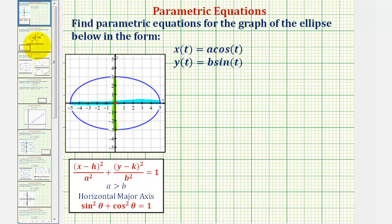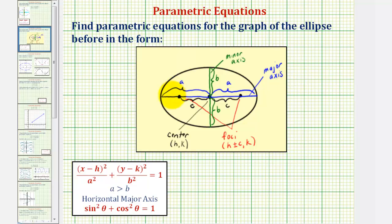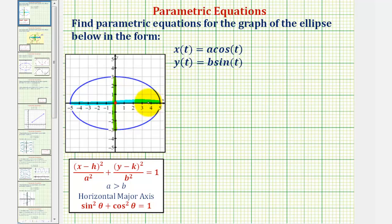And now for a quick review: the length of the major axis is two a, or we can say the length from the center to one endpoint of the major axis is a. And the length of the minor axis is two b, or we can say the length from the center to one endpoint of the minor axis is b. So looking at the major axis, notice how this means that a is equal to five and b is equal to three.